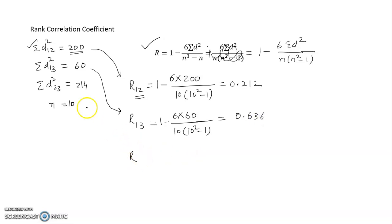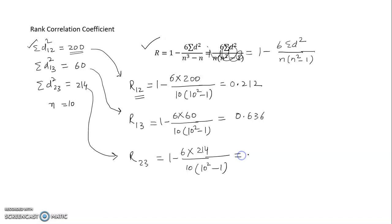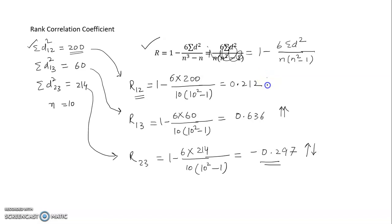For the second and third judge: r23 = 1 − (6 × 214) / (10 × (100−1)) ≈ −0.297. This is a negative correlation, meaning judges 2 and 3 tend to think in opposite directions. The strongest positive correlation is between judges 1 and 3 (r13 ≈ 0.636), making them the most alike-minded pair.